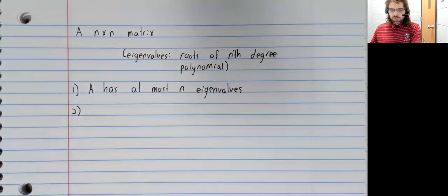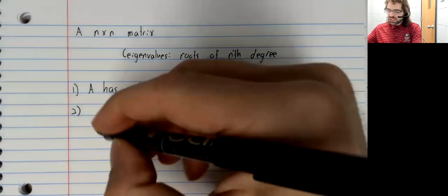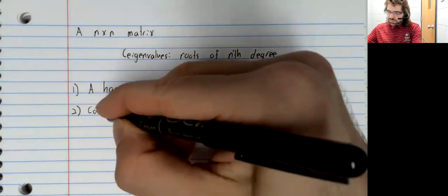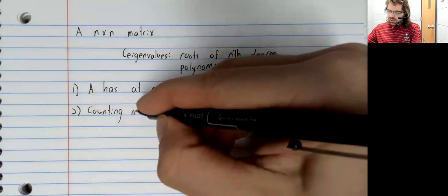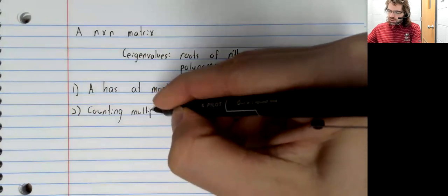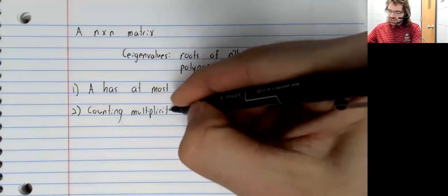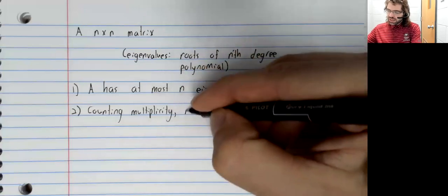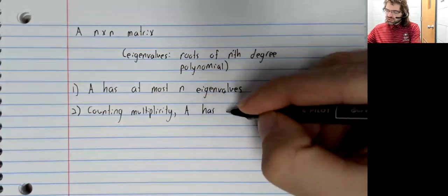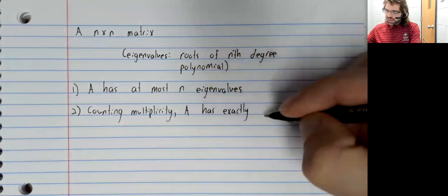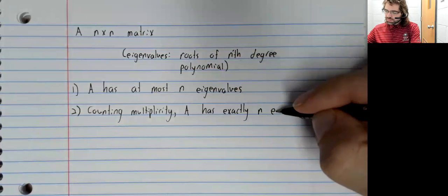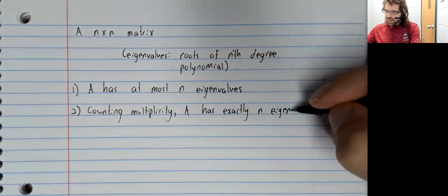So because eigenvalues are roots, we can talk about multiplicity, and counting multiplicity, A has exactly n eigenvalues.